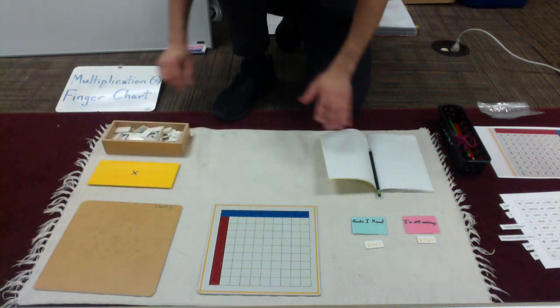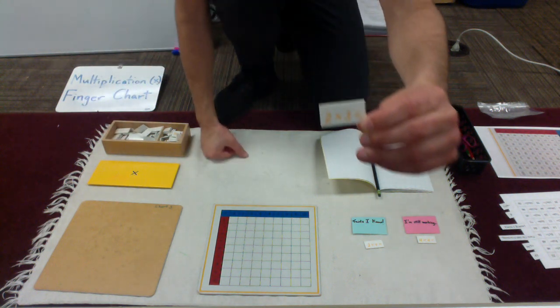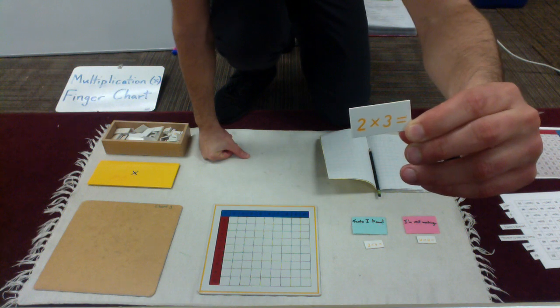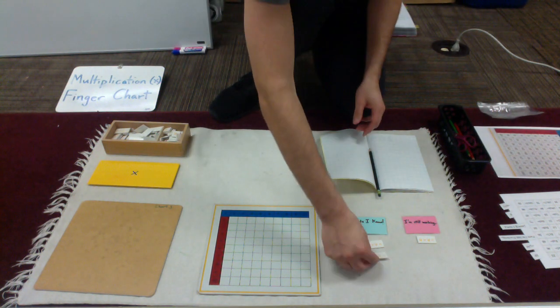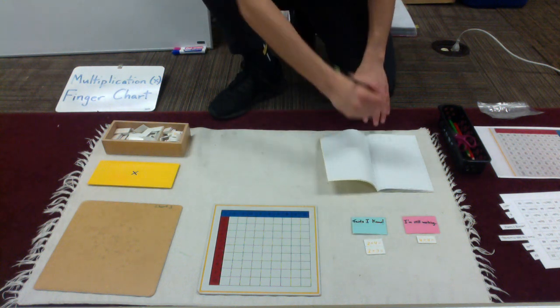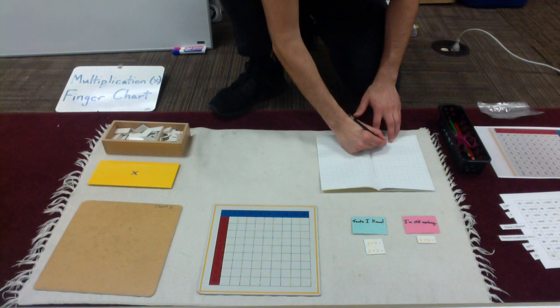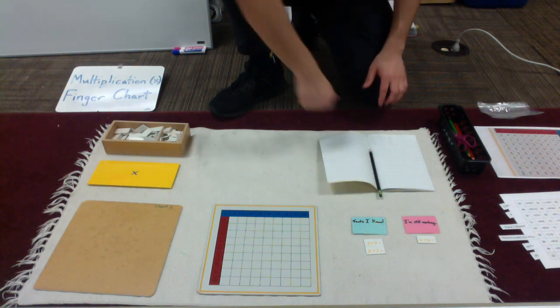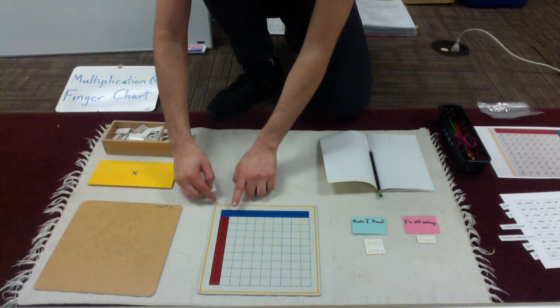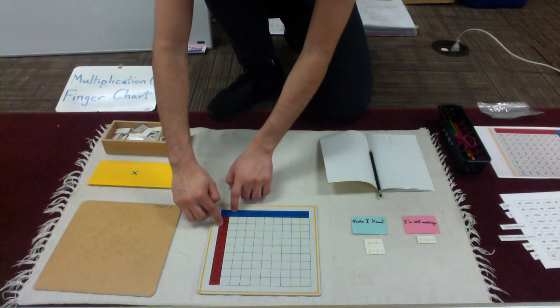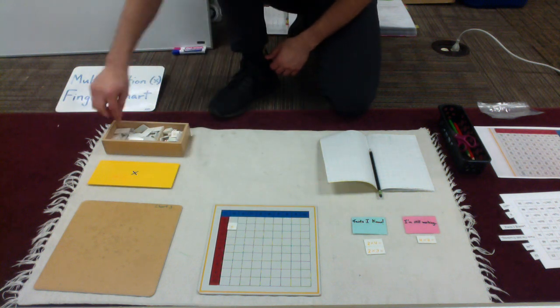And I'm going to draw my first equation. 2 times 3 equals. That is a fact I know. 2 times 3 equals 6. So I'll record 2 times 3 equals 6. Then I'm going to find my product, 6, and place it on my board. 2 times 3 equals 6. Let's try another one.